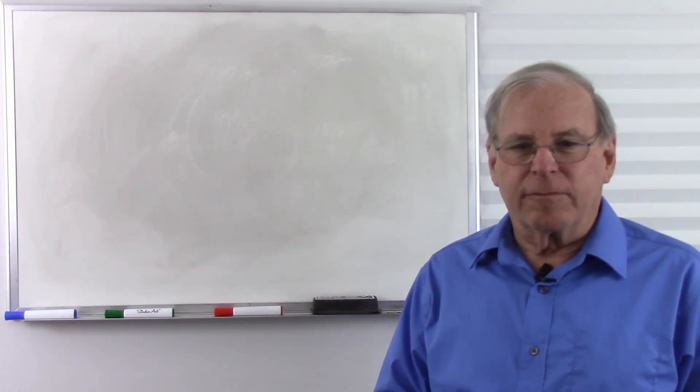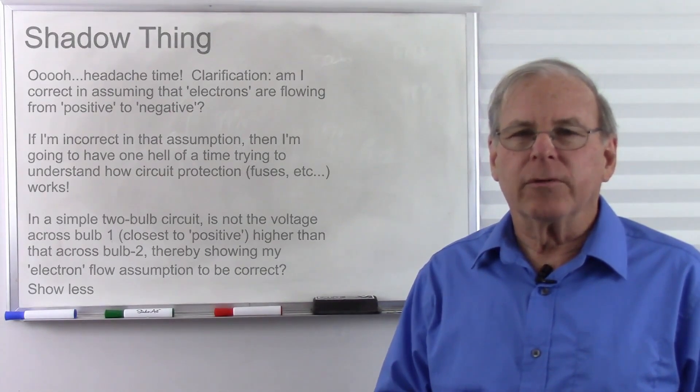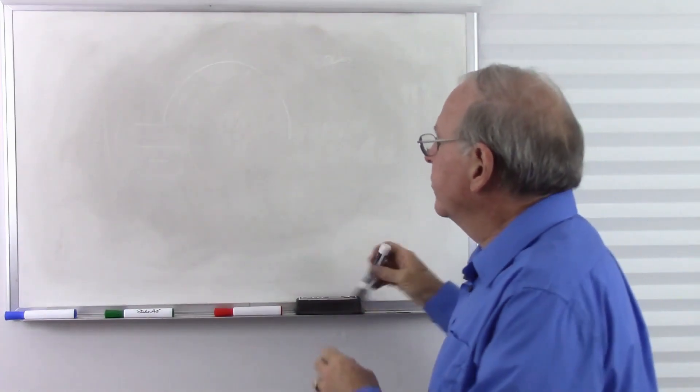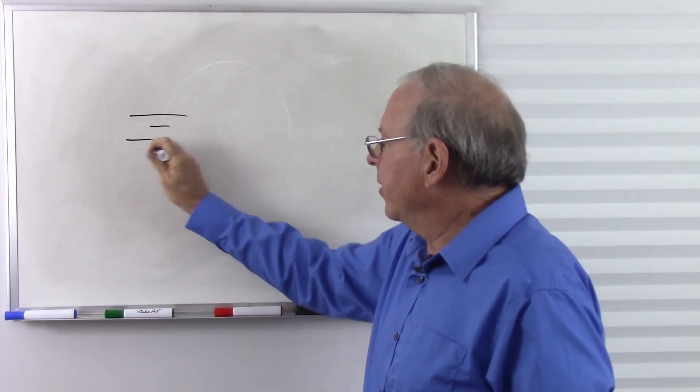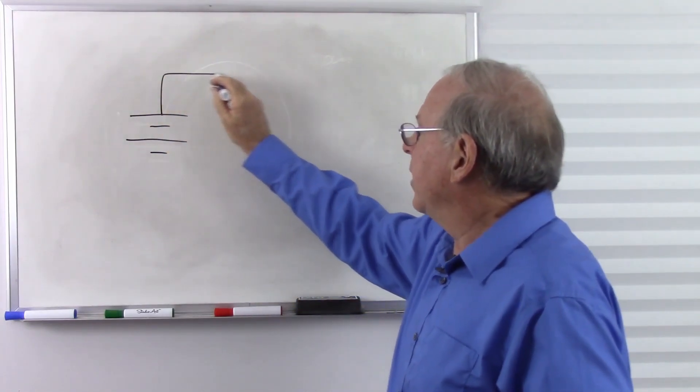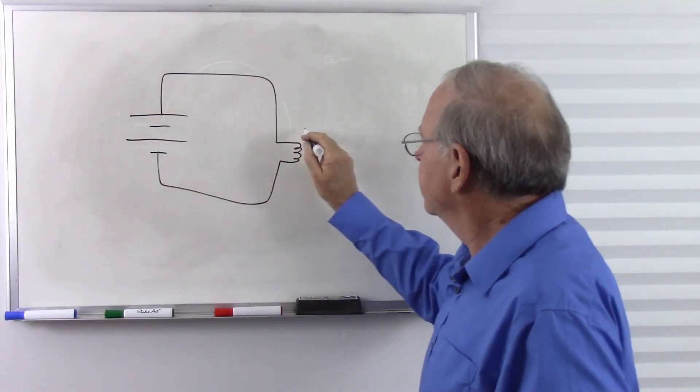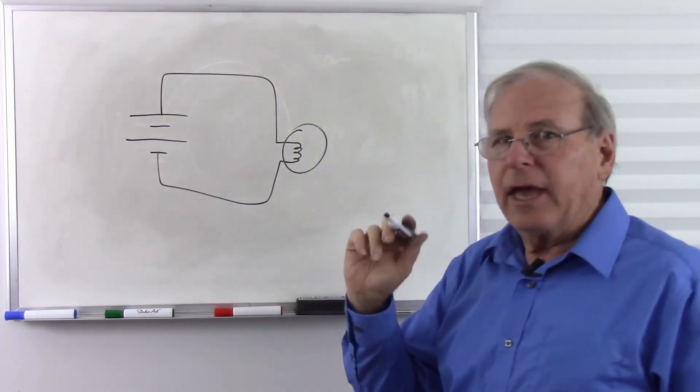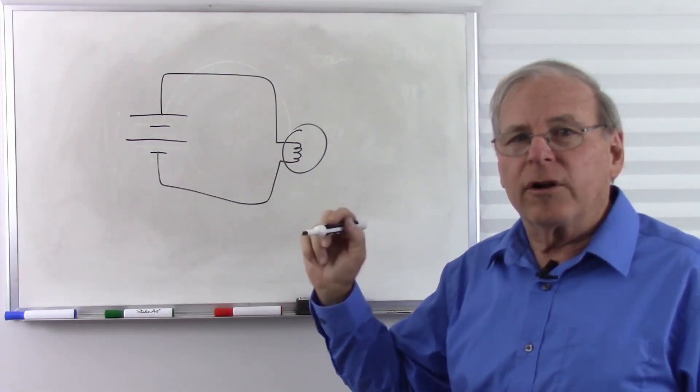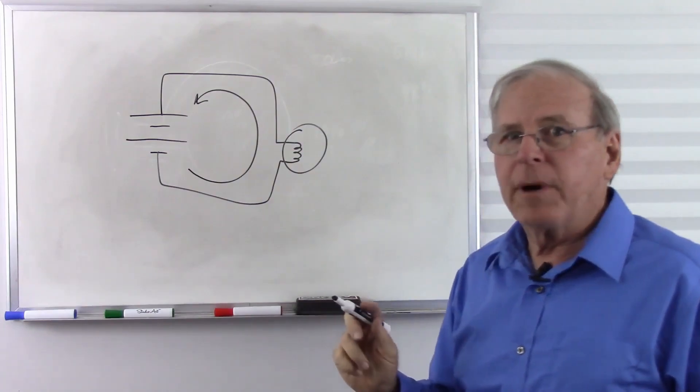Our next question comes from Shadow Thing. I'm not going to read the whole question. You can read it in the description below. But the question is basically this. If we have a circuit where we have a battery, positive and negative terminals on the battery, and we have a circuit that goes through, just to keep it simple, through a light bulb, and we know that the current through the circuit is actually electrons moving from the negative side to the positive side.